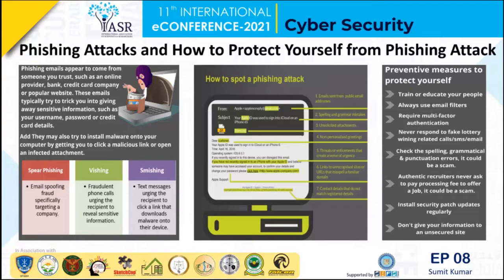The second type is vishing, also called voice phishing. In this, the fraudster uses phone calls to obtain sensitive personal and financial information. In this scenario, the attacker tries to scare the victim by informing them that their credit or debit card has been blocked. The victim becomes worried and starts panicking, and the attacker takes advantage of this situation and asks the victim to provide sensitive personal information to reactivate the card.